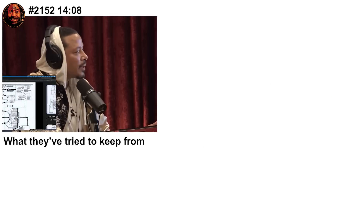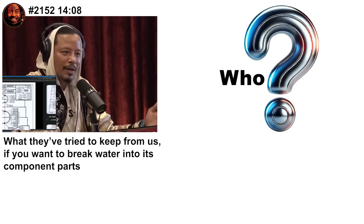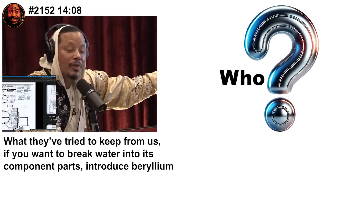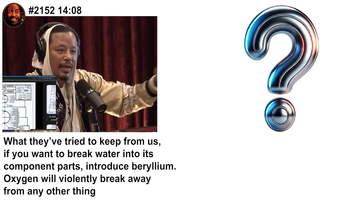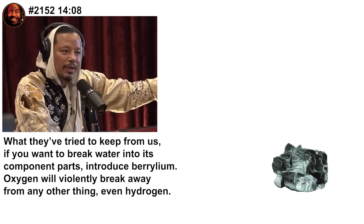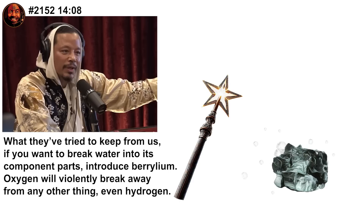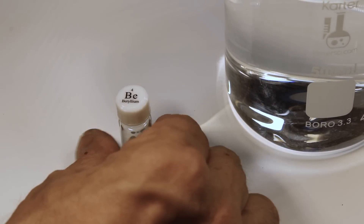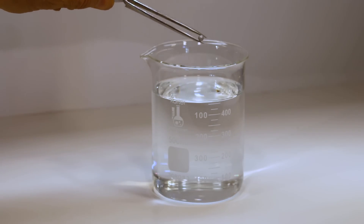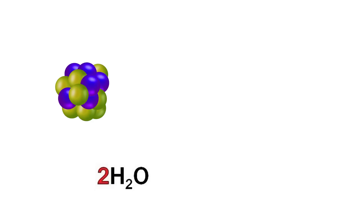Terence claims that if you want to break water into its component parts of hydrogen and oxygen, all you have to do is introduce beryllium, or the sound of beryllium, and oxygen will violently break away from any other thing, even hydrogen. Creating hydrogen and oxygen with a tone — that would be amazing. Too bad Terence is not sharing the secret beryllium frequency. But he has given us something to test. Here's a beaker of water and a piece of beryllium. Don't see anything violently happening here. That was disappointing.